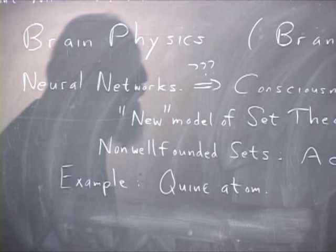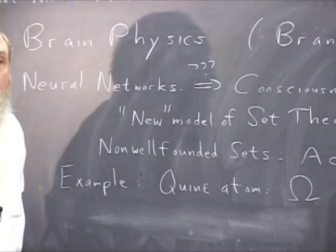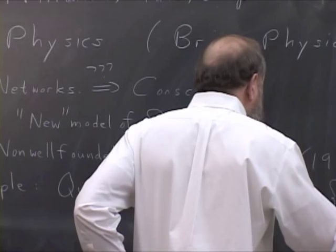And omega has exactly one element, which is itself. And now you may say this is absurd, you've never seen such an object in mathematics, such an object couldn't exist.